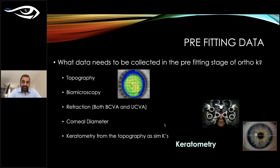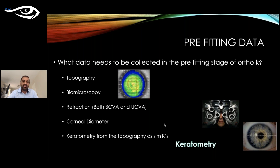For pre-fitting data, you need topography, biomicroscopy, refraction — including binocular and monocular vision — and corneal diameter measurement, which can be done on the topographer or with a ruler. Keratometry readings from topography are also needed to order lenses. If you use a trial set, work from that, but with COVID-19 I recommend providing data to manufacturers or using design software, and ordering the lens directly.